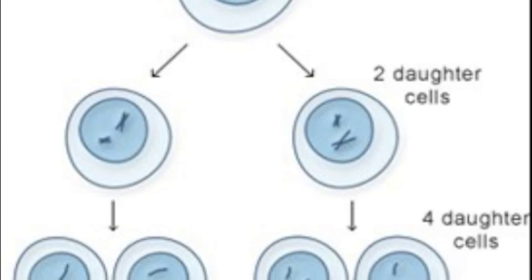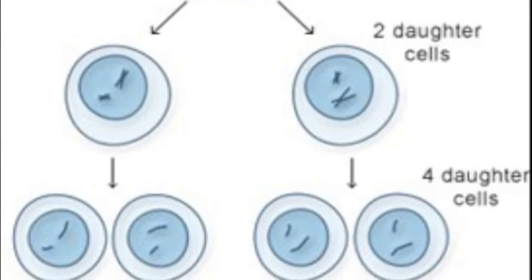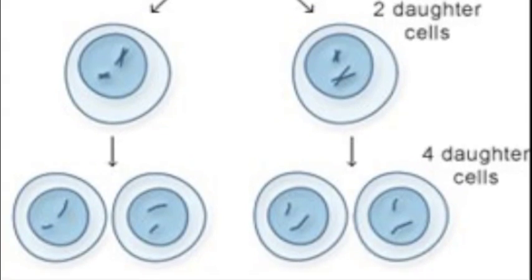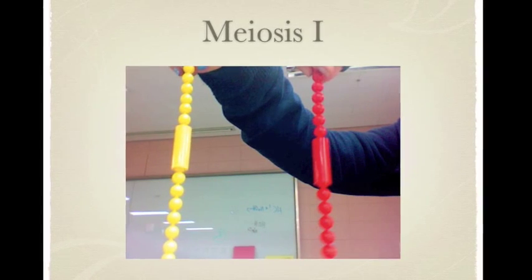Meiosis results in the division of one parent cell into four daughter cells, each with a haploid set of unreplicated chromosomes. Each of those daughter cells are all different from each other, creating genetic variation.